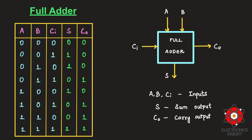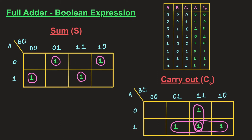The K-map technique for three input variables is presented here. For the sum output, we identify which input combinations cause sum to be one: 001, 010, 110, and 111. These are marked on the K-map. Similarly, we find which input combinations cause the carry out to turn on as one.